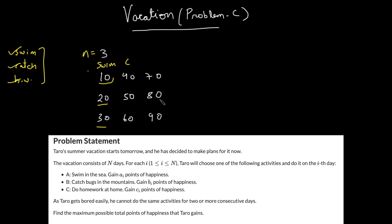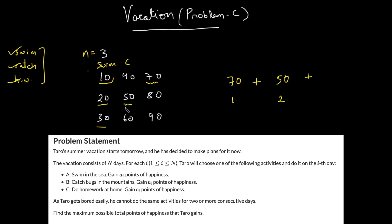The goal is to maximize the total points. The condition is: if you perform homework on the first day, you cannot do homework on the next day. So if you take 70 on day one, you cannot take 80 on day two. Let's take 50 instead — that means catch on day two. Then on day three you cannot catch again, so let's swim. The total is 210.